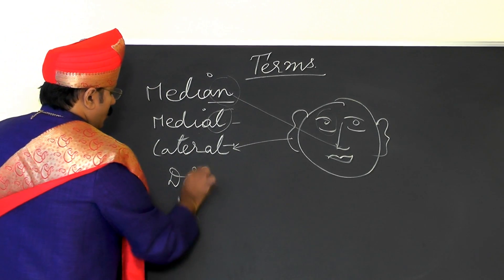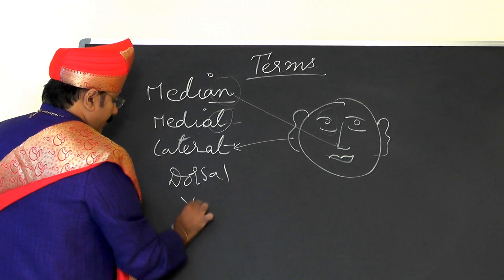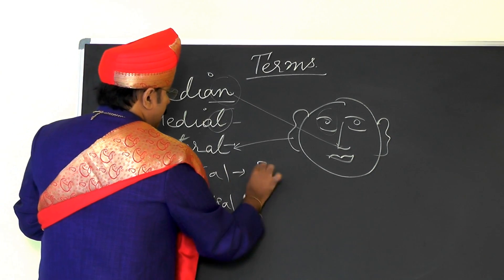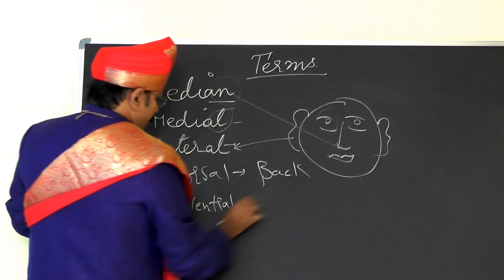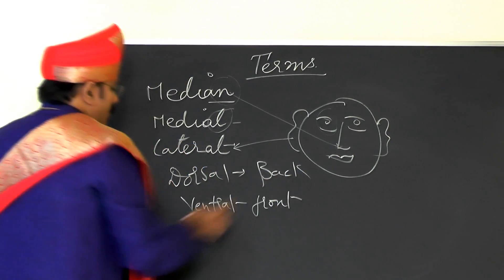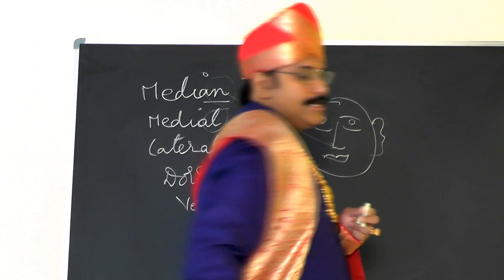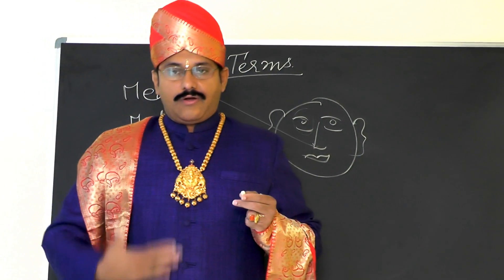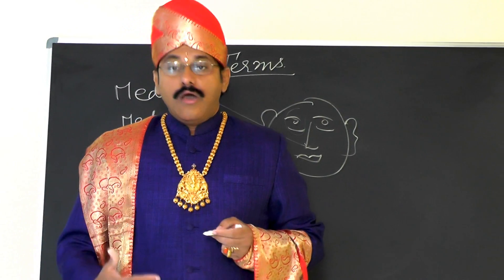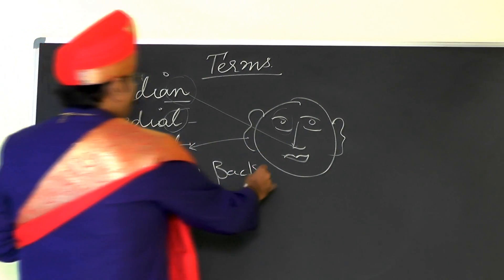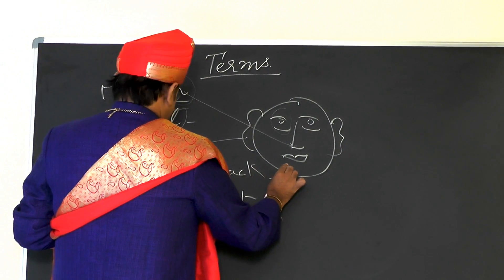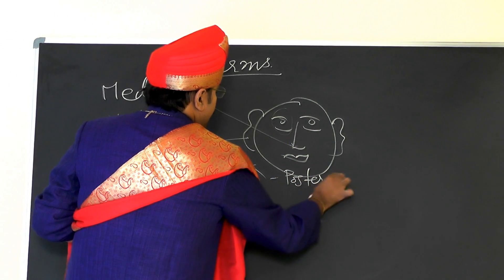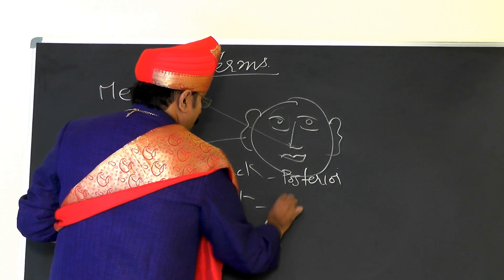We also have the words dorsal and ventral. Dorsal means the back, and ventral means the front. So this portion is called dorsal where you see the back, and this portion is called frontal. Similarly, we have posterior and anterior: anterior means the front, posterior means the back.